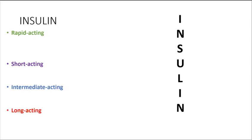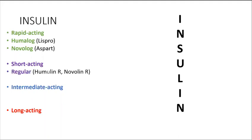For your rapid acting, we have Humalog and Novolog. Humalog is also called lispro; Novolog is also known as aspart. We also have short acting, which is our regular insulin — those that come with the letter R: your Humulin R and your Novolin R.